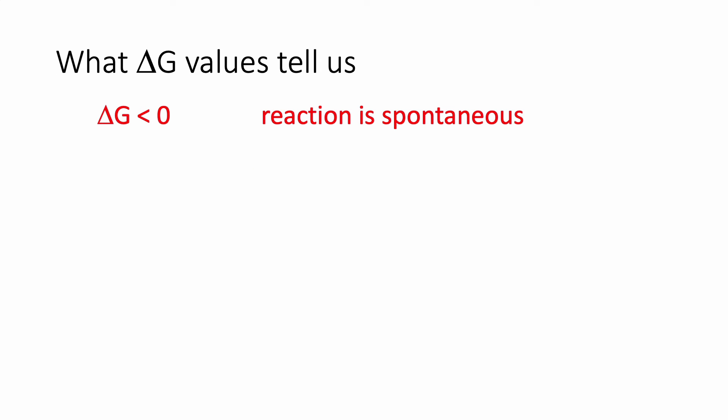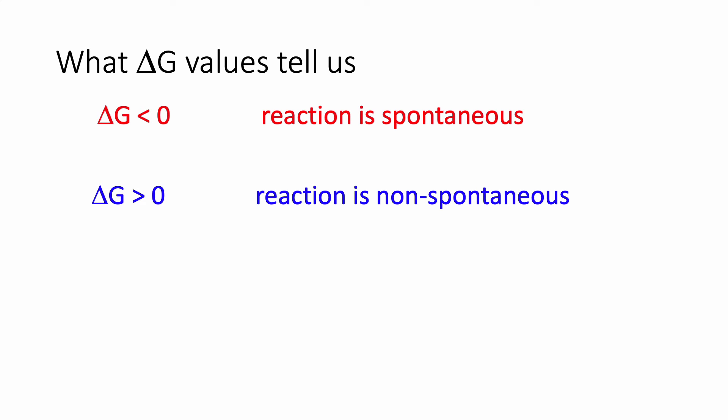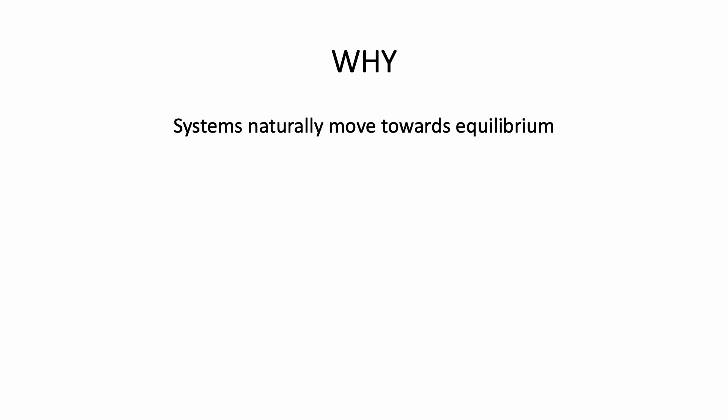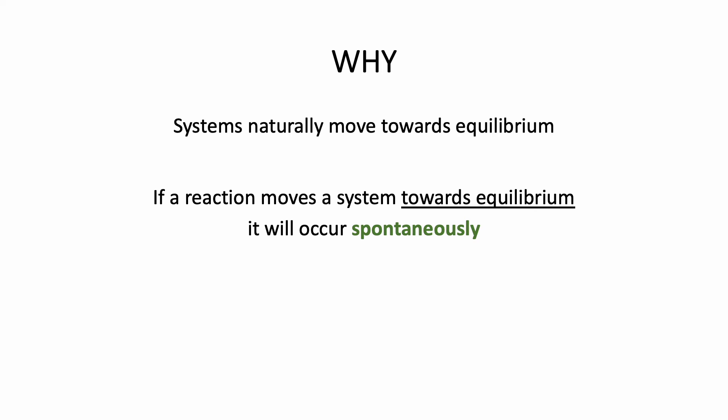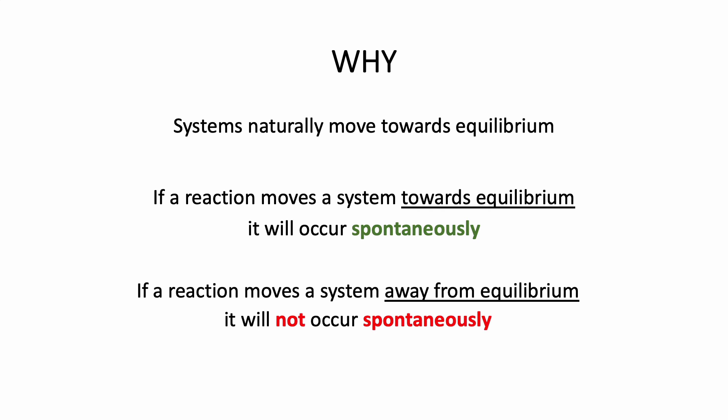The Gibbs free energy values tell us whether a reaction is spontaneous. We're looking for negative delta G values. If delta G is less than zero for a particular reaction, that reaction is spontaneous. If delta G is greater than zero, the reaction is non-spontaneous. If delta G equals zero, the system is at equilibrium. Systems naturally move towards equilibrium — if a reaction moves a system towards equilibrium, that reaction will occur spontaneously. Any reaction that moves a system away from equilibrium will not occur spontaneously.